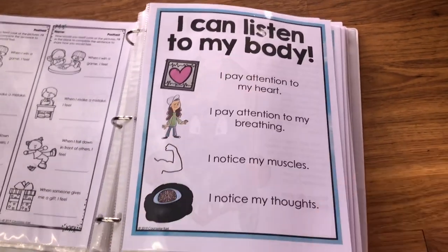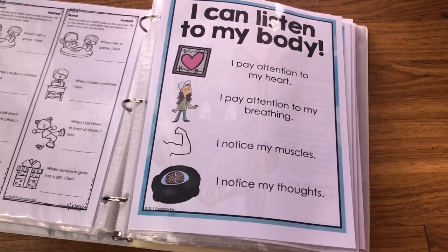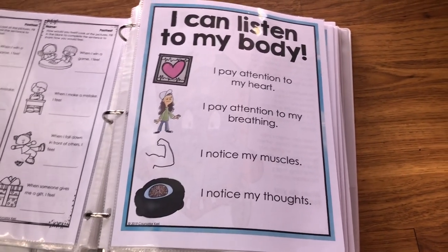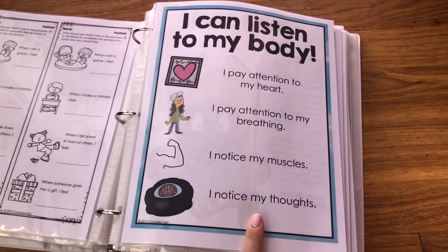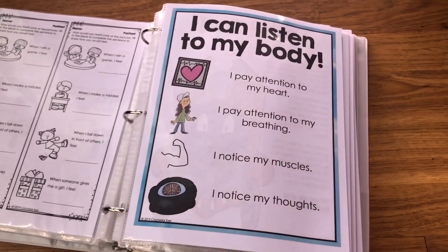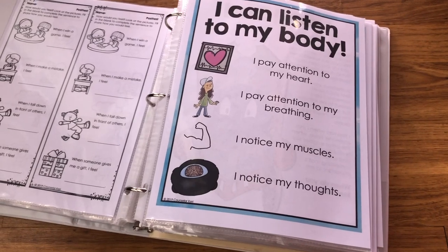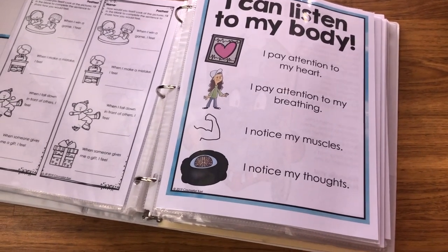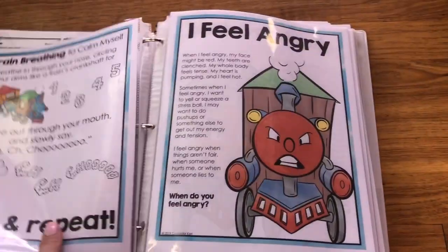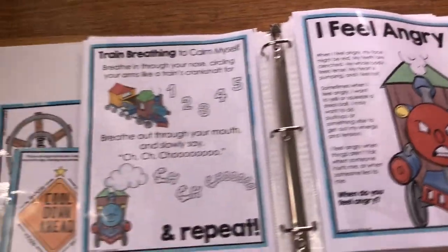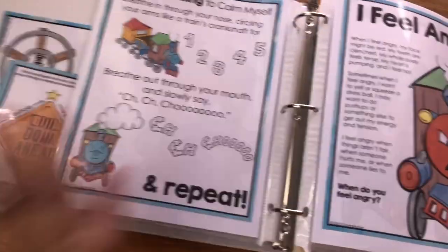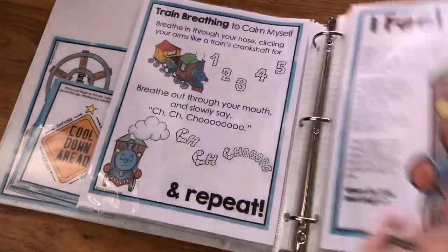There's a PowerPoint story to go along with this one, and then some slides to talk about how you can recognize emotions. These are the clues I give students: you can pay attention to your heart and notice how fast it's beating, pay attention to your breathing, notice your muscles and whether they're feeling tense, and notice your thoughts. Those are the four things they're going to be looking into.